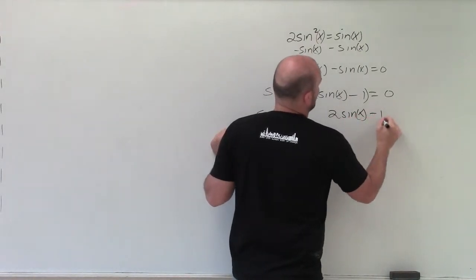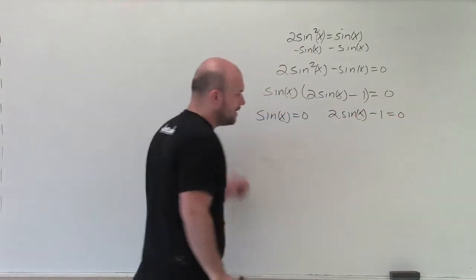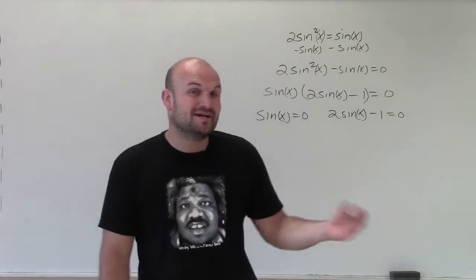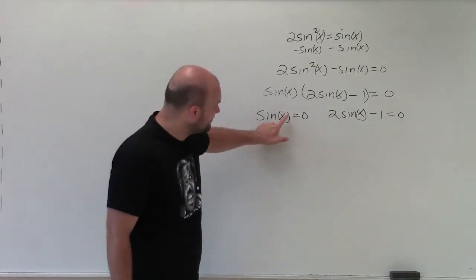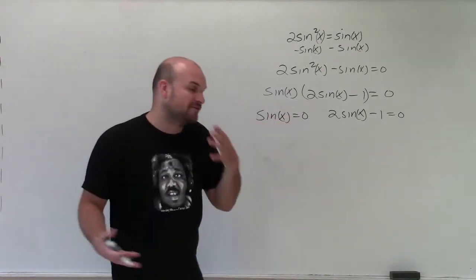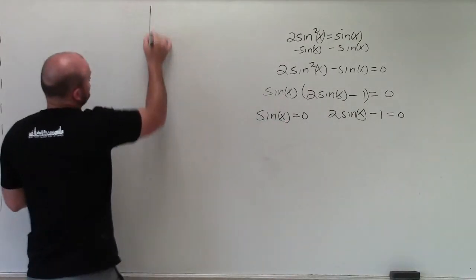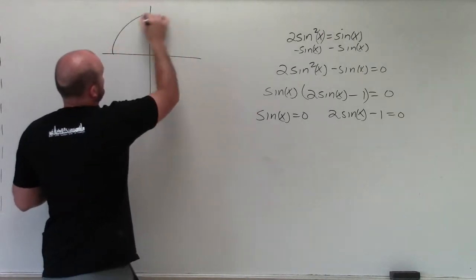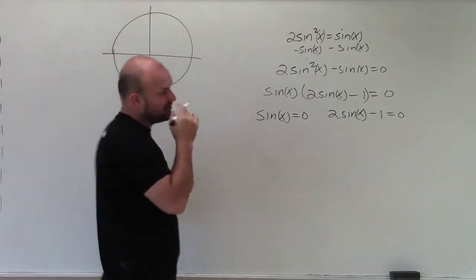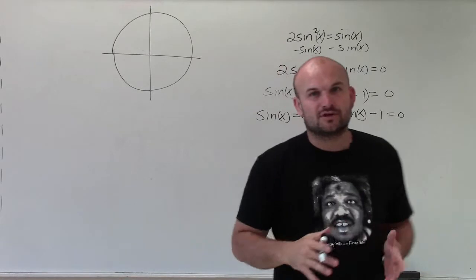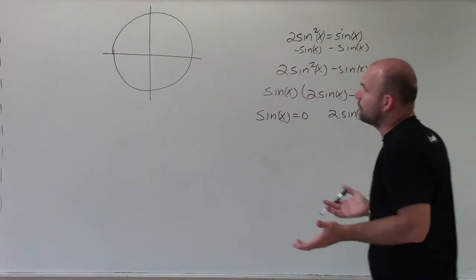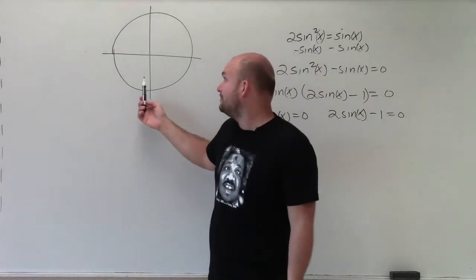And now I have two equations with the variable that I can now solve for x. So to solve for x, we need to obviously know our unit circle. And I'm not going to go ahead and fill out everything on the unit circle, but we're just going to go through some of the important steps and points of our unit circle.